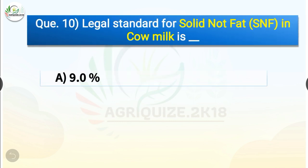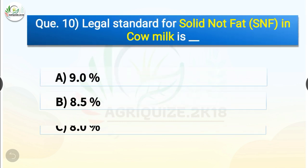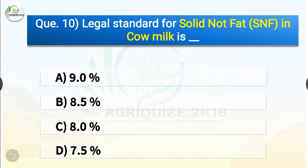Question number 10. Legal standard for solid not fat (SNF) in cow milk is dash. The options are 9%, 8.5%, 8% or 7.5%. The correct answer is option B, 8.5%. So the legal standard for SNF in cow milk is 8.5%.